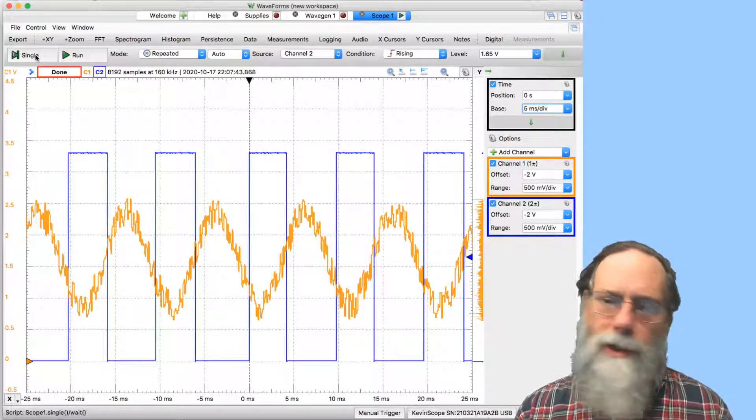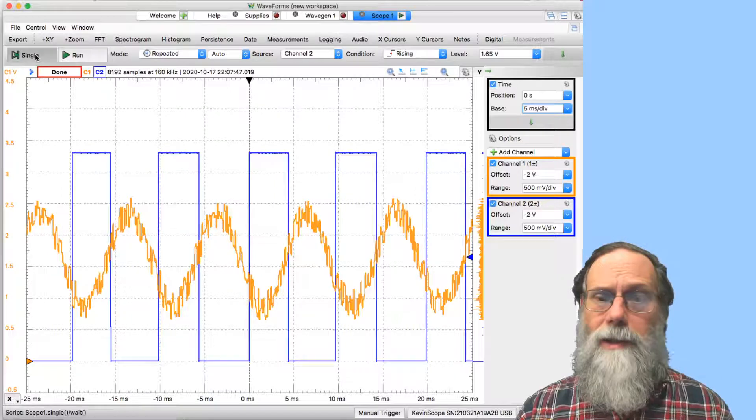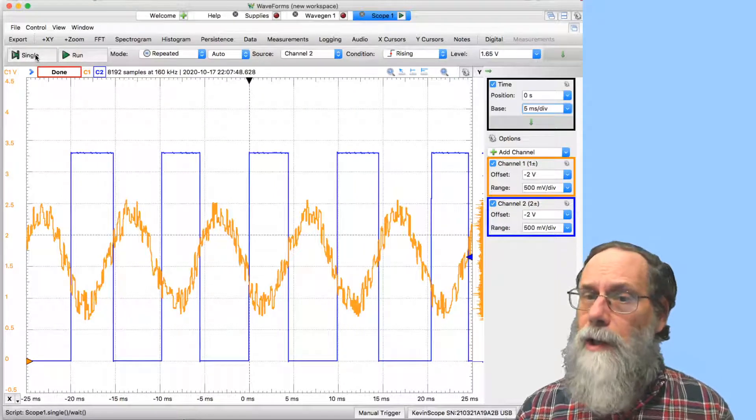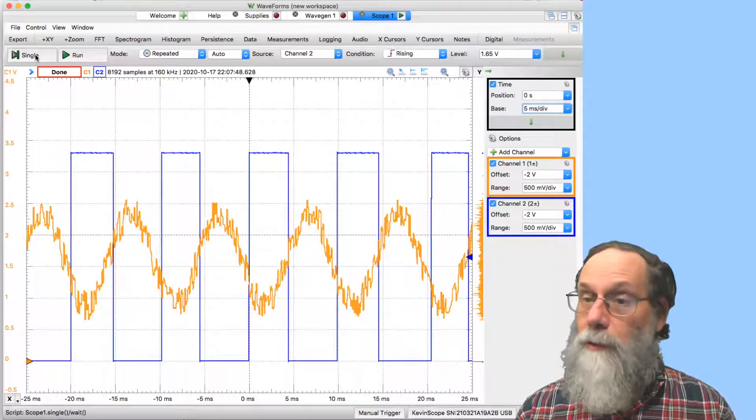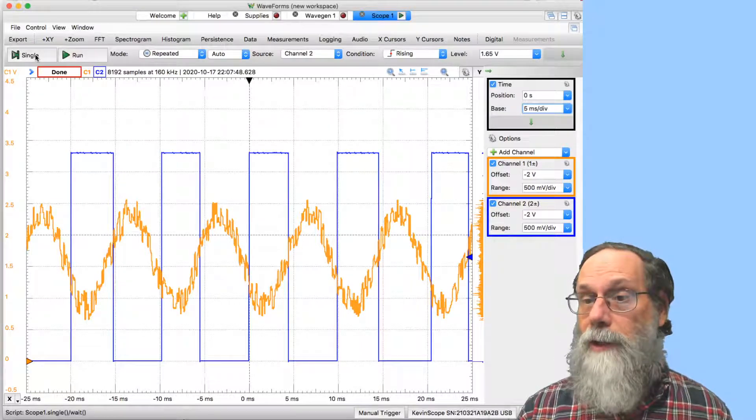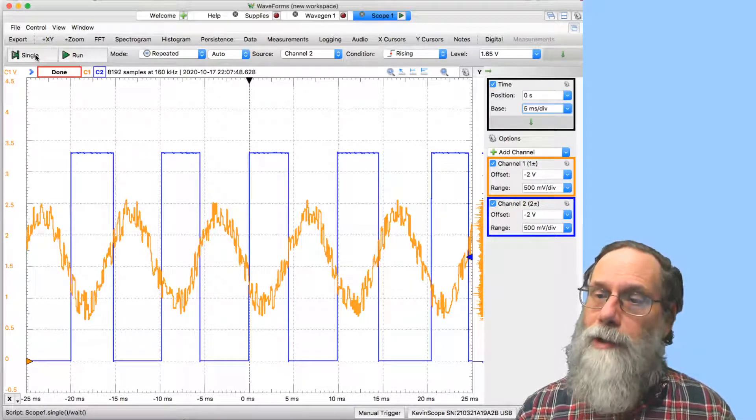But you notice the transitions don't always occur in exactly the same places. The noise is enough to disrupt when the transition happens, when do we first cross that threshold. But we don't cross the threshold twice.